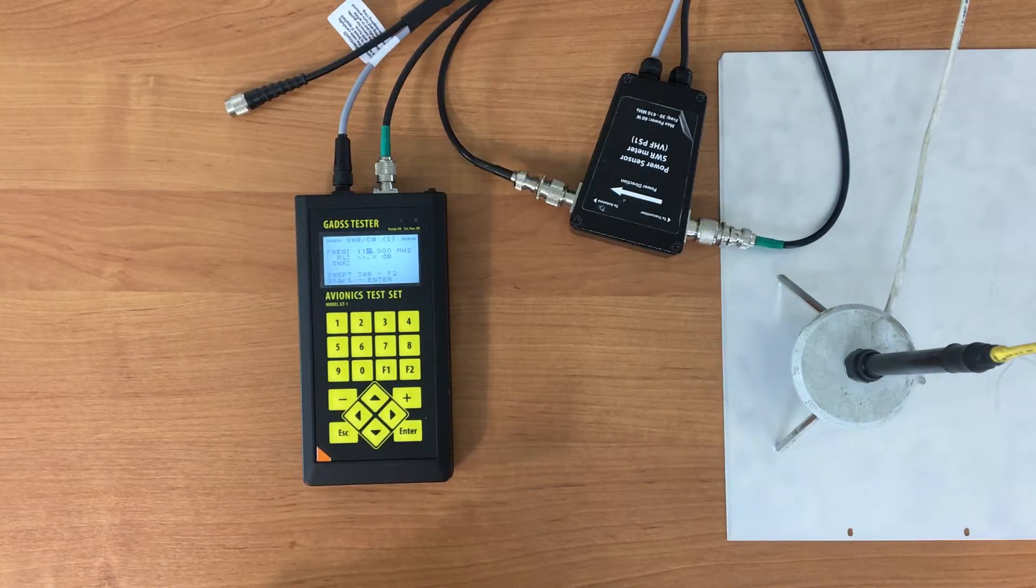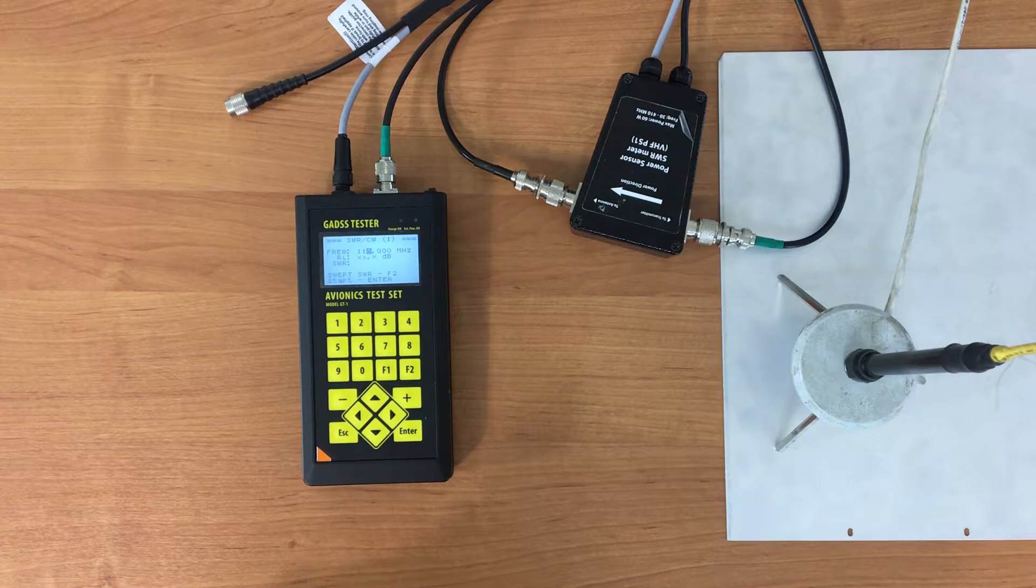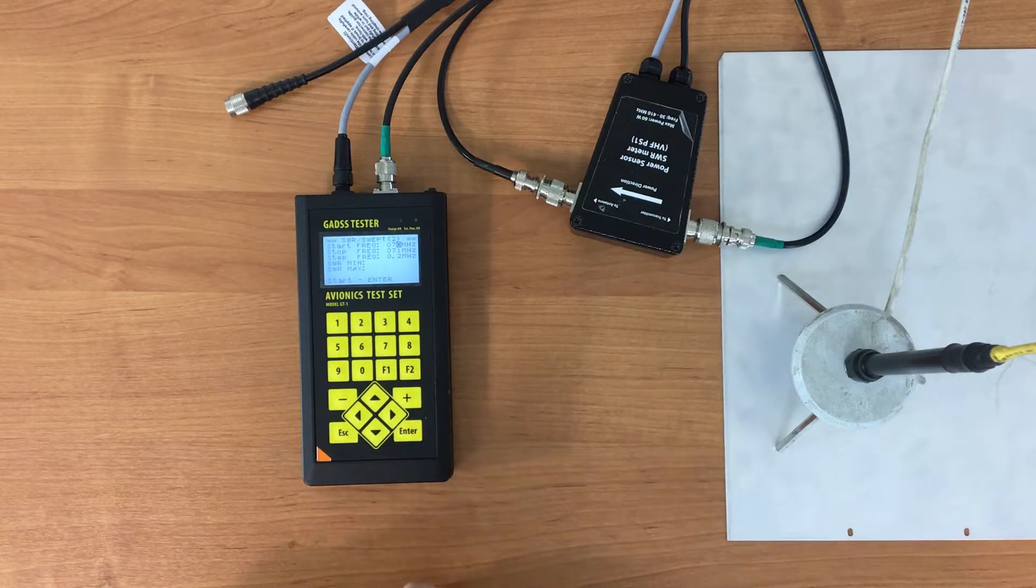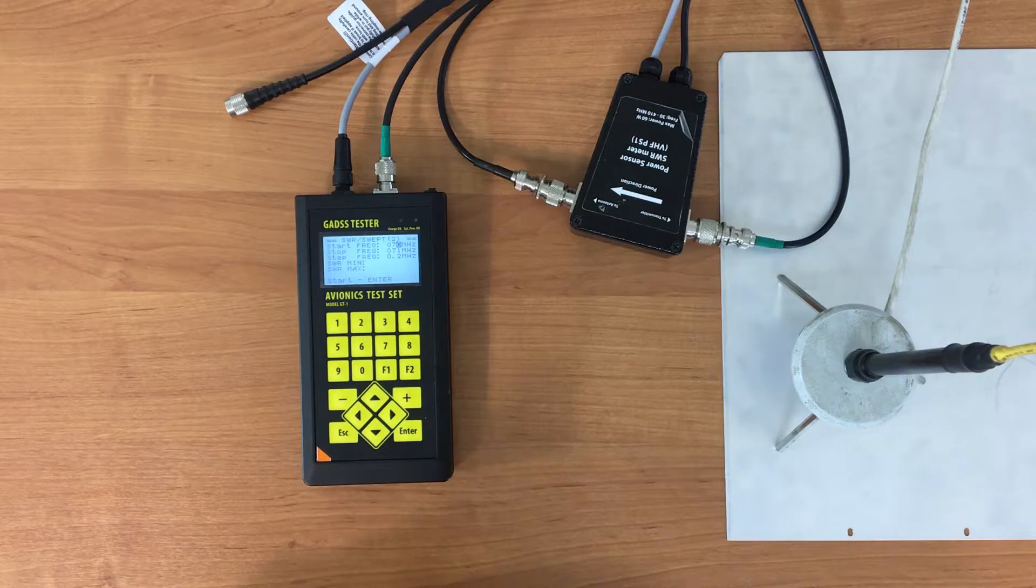Besides continuous wave SWR, we can also make SWR measurements in the range of frequencies. To enter this mode, we press F2 key. Here we set up the beginning and the end of the range of the tested channel and set up the step.